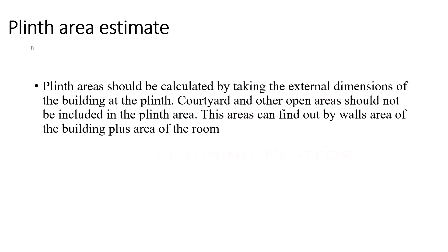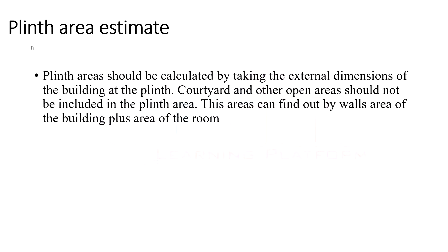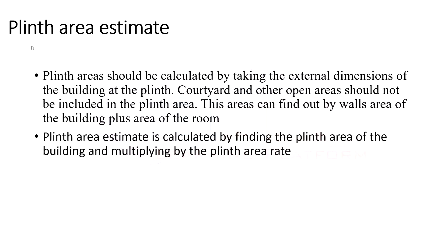For the plinth area estimate, the plinth area is calculated by taking the external wall dimensions of the building. Courtyards and open areas should not be included in the plinth area. The plinth area can also be found by adding the walls of the building plus the floor area of the rooms. The estimate is calculated by multiplying the plinth area by the plinth area rate.